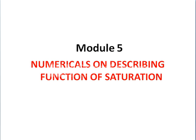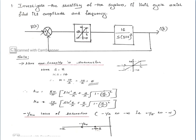This is a numerical on describing function of saturation. The question is to investigate the stability of the system; if a limit cycle exists, find its amplitude and frequency. Consider the given figure. First, identify the nonlinearity — here the nonlinearity is saturation, where the output follows the input up to a particular limit.